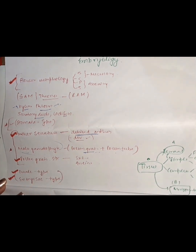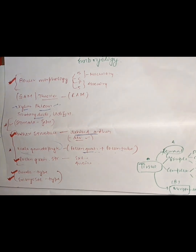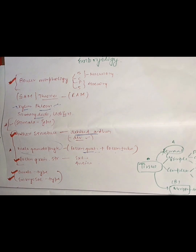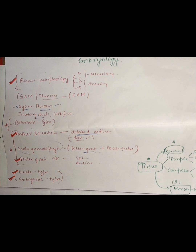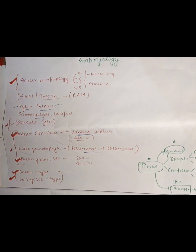We also have a very important topic — ovules. There are five types of ovules: anatropous, hemianatropous, orthotropous, campylotropous, and amphitropous. You should know about their structures — what degree of rotation they have, and the position of the micropyle, funicle, and chalaza.